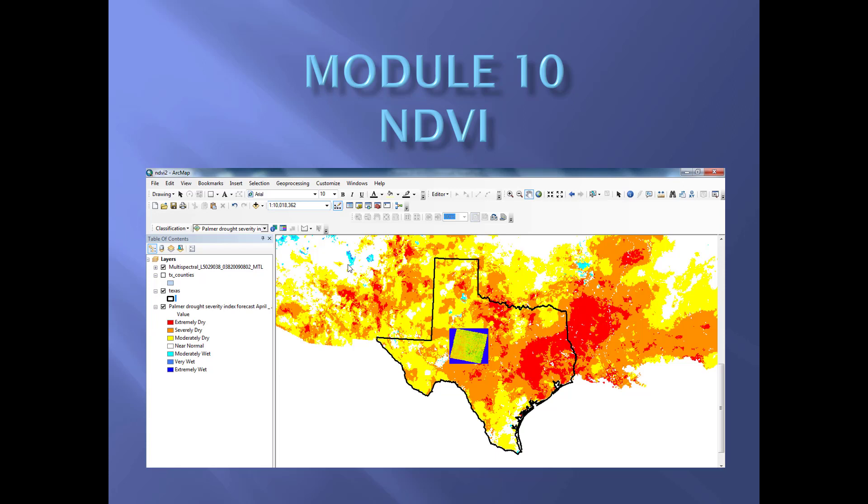We are looking at drought severity, and you can see that it is color coded from red and orange and yellow down to shades of blue.